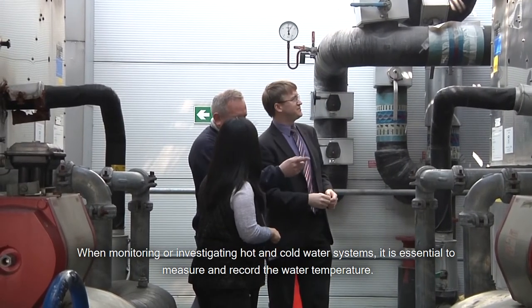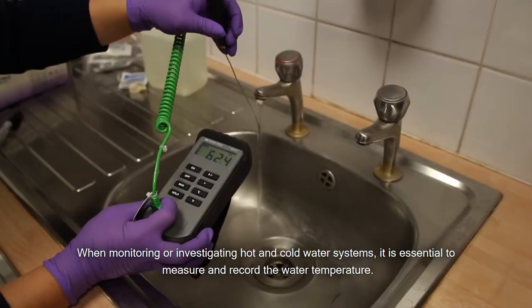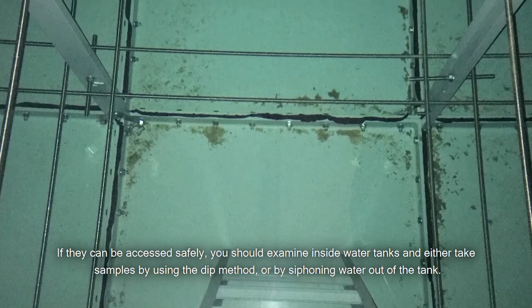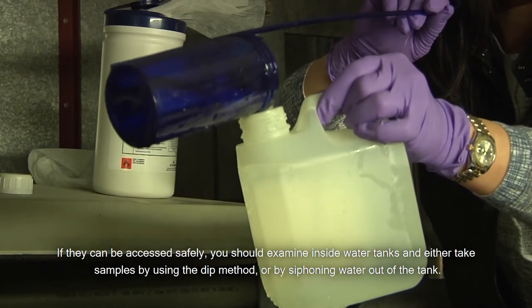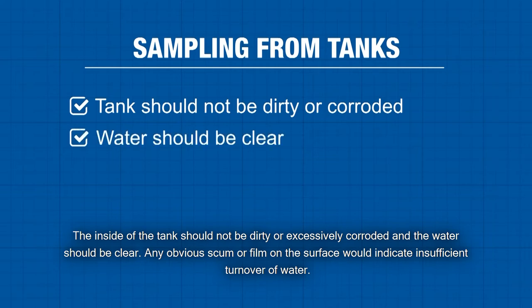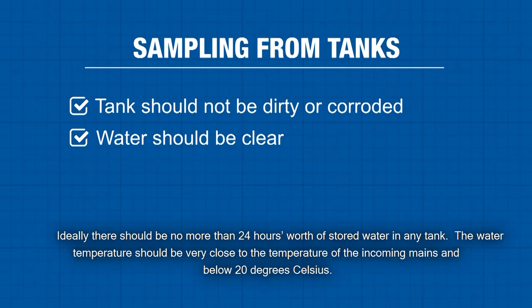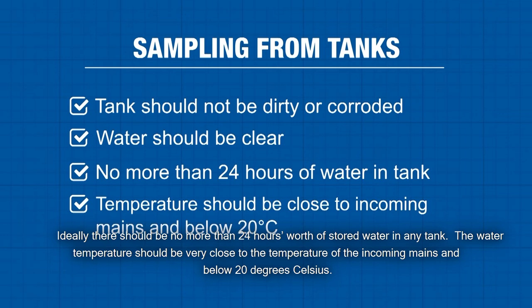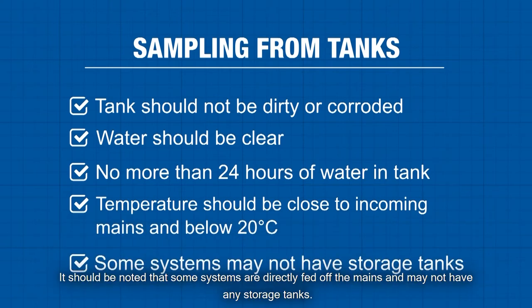When monitoring or investigating hot and cold water systems, it is essential to measure and record the water temperature. If they can be accessed safely, you should examine inside water tanks and either take samples by using the dip method or by siphoning water out of the tank. The inside of the tank should not be dirty or excessively corroded and the water should be clear. Any obvious scum or film on the surface would indicate insufficient turnover of water. Ideally, there should be no more than 24 hours worth of stored water in any tank. The water temperature should be very close to the temperature of the incoming mains and below 20 degrees Celsius.